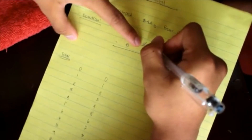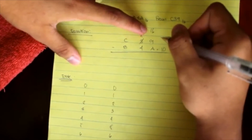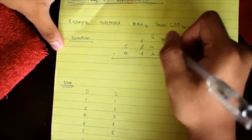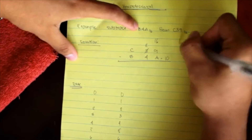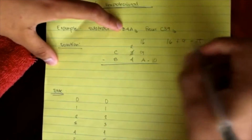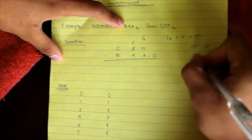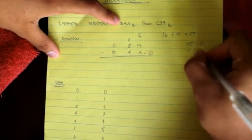Refer to the table — A equals 10. Since we cannot subtract, we borrow 1 from 3, which becomes 2. Then 16 plus 9 equals 25. So 25 minus 10 equals 15. The value of 15 equals F, so the first digit of the answer is F.